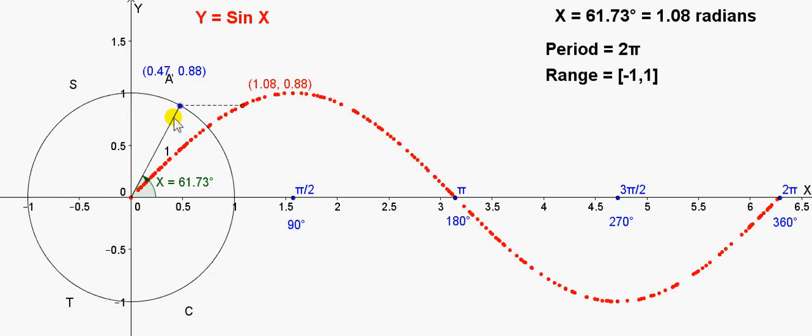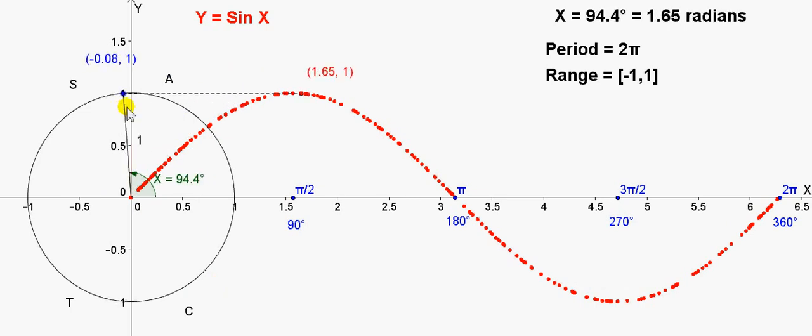And then we have the maximum value, which is plus 1. So, the function ranges from minus 1 to 1 over a domain of 0 to 2 pi radians. Actually, it doesn't matter what the domain is. The minimum value of y is minus 1. The maximum is plus 1. We have a continuous range of values of y from minus 1 to plus 1.